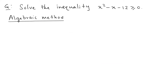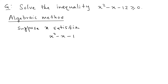Let's look at the algebraic method first. The goal is to solve the inequality. Suppose x satisfies the inequality x squared minus x minus 12 greater than or equal to 0. The first step is to factor.